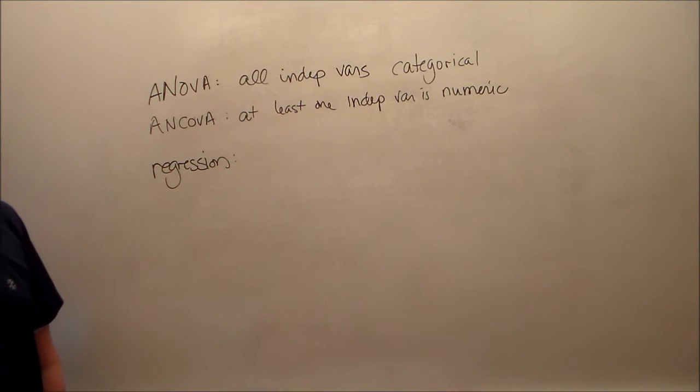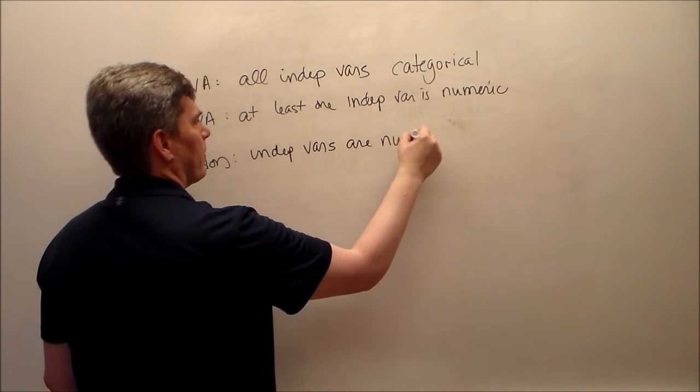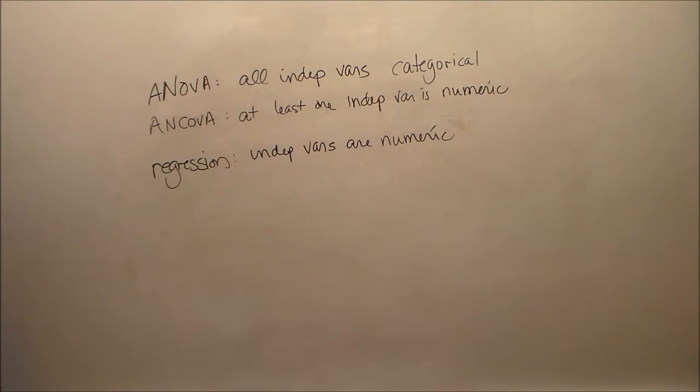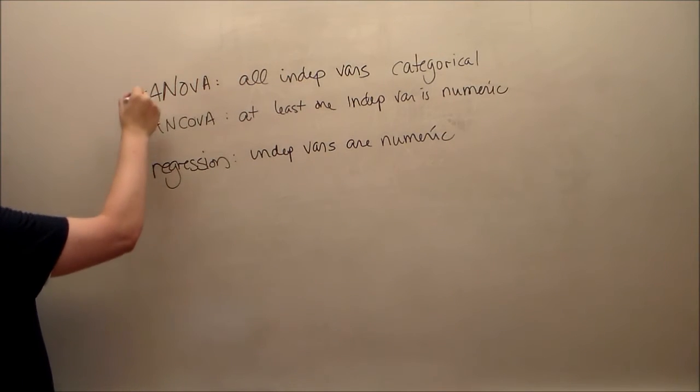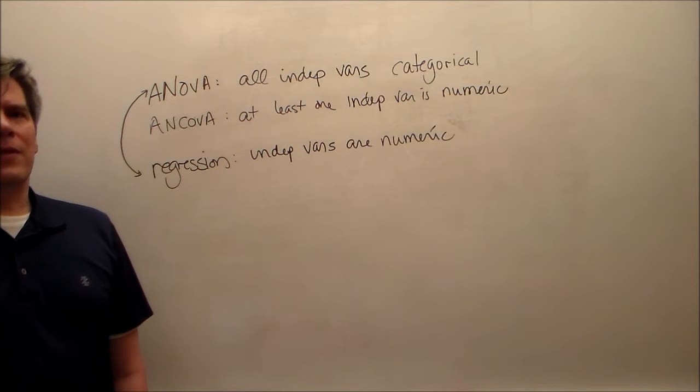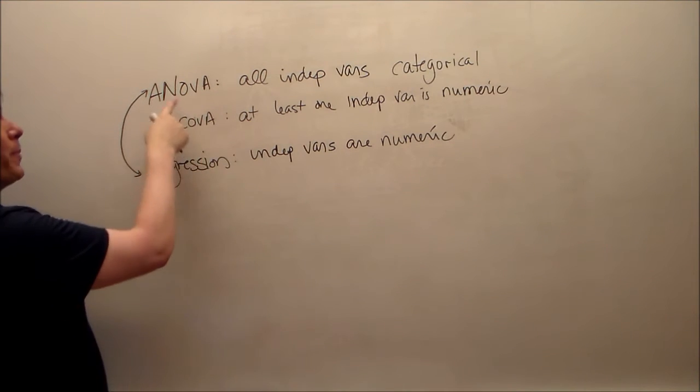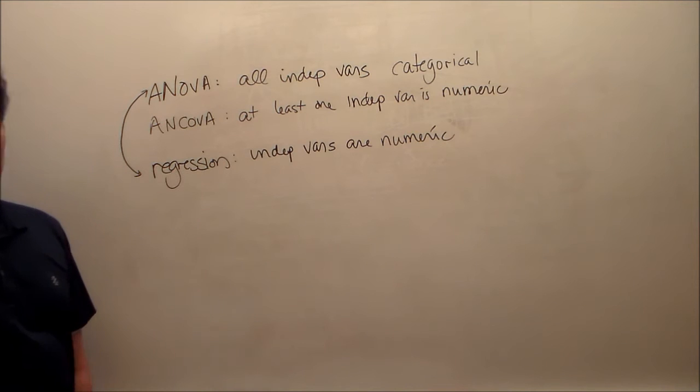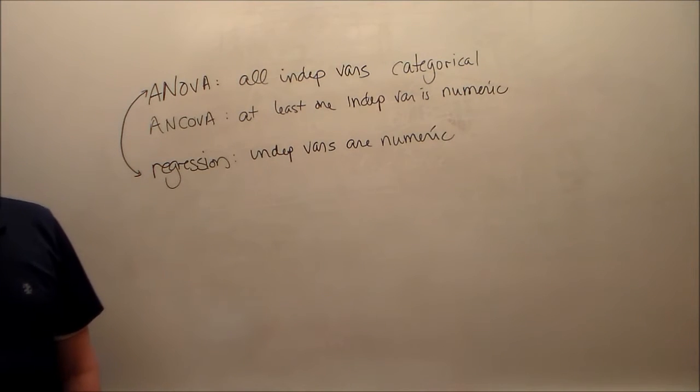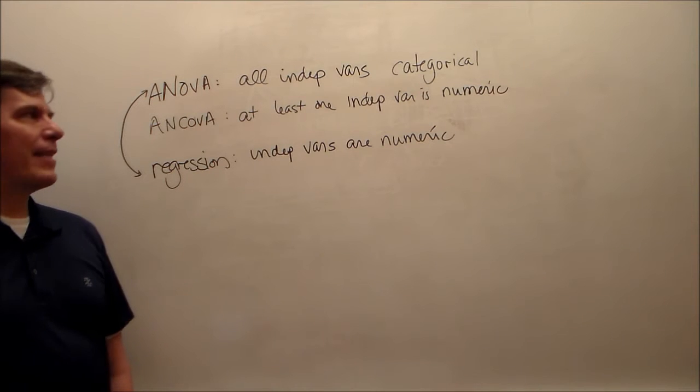Remember regression, if you've taken regression? When we first introduced you to regression, we said all of the independent variables were numeric. So this ANCOVA kind of serves as the bridge between ANOVA and regression. At least it seems to. But again, as I've said previously, there is absolutely no difference in the mathematics between ANOVA and regression, and therefore between ANCOVA and regression. It's all matrix algebra underneath the hood.